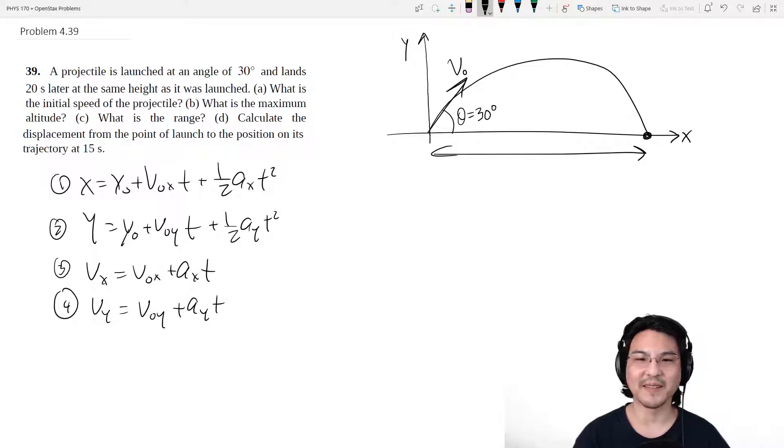So it lands at y equals zero. So that means why don't we use this formula right here? Okay, so it lands on the ground at the same height as it was launched. So this is zero.